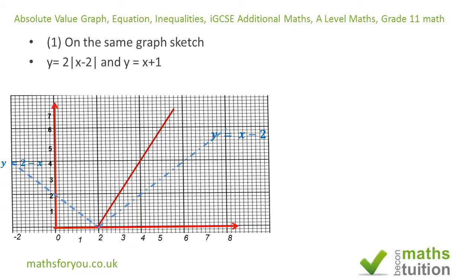That gives us the graph of 2 times (X minus 2) and the graph of 2 times (2 minus X). So what's happened is: for a given X value we get a Y value, and the equivalent Y value for this complete graph is that Y value doubled.